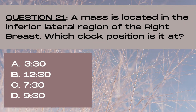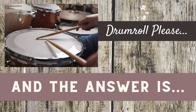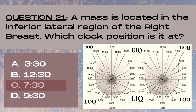Question 21. A mass is located in the inferior lateral region of the right breast. Which clock position is it at? A 3:30, B 12:30, C 7:30, or D 9:30? The answer is C, 7:30. The inferior lateral section of the right breast triangulates to the lower outer quadrant and represents clock positions from 6 o'clock to 9 o'clock.